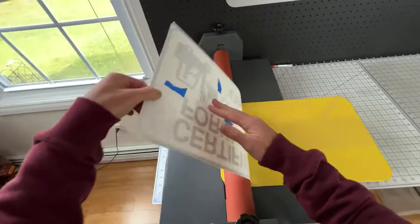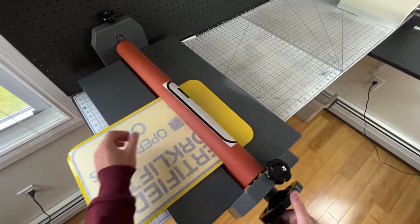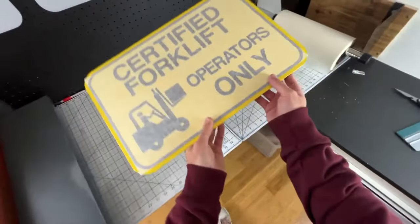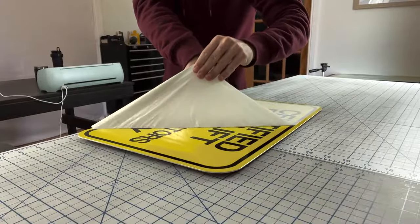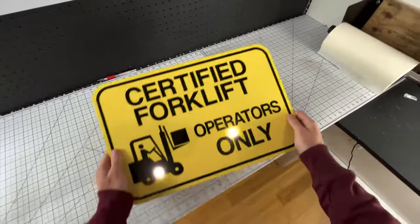So we're going to take this now and just put it in our roller, fold the decal over, and I like to peel off the back sometimes with these. The ones that have details in them, if I pull it off first it just removes my chances of ever ripping the decal, because if that happens there's no going back. You got to cut a new decal, it just takes a lot longer. But if you successfully make it through, you've got a beautiful certified forklift operators only sign.